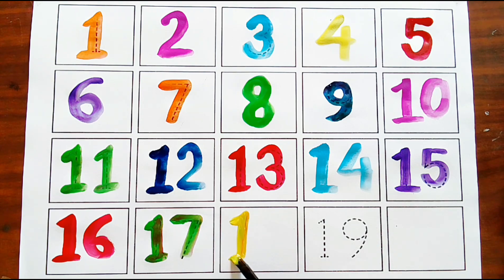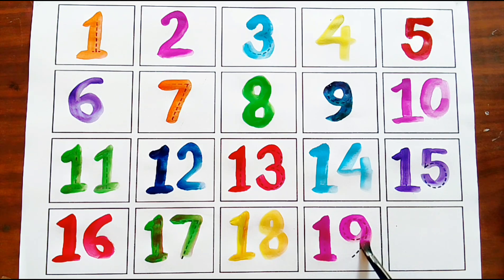Eighteen, yellow color. One eight, eighteen. Purple color, one nine, nineteen missing number. Twenty, orange color, two zero.